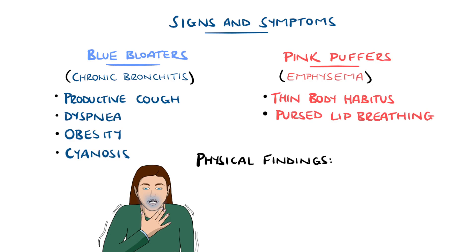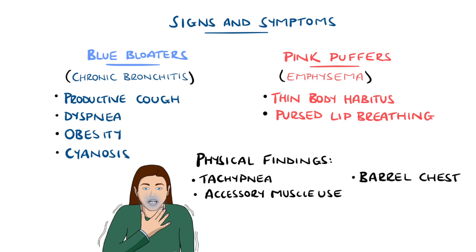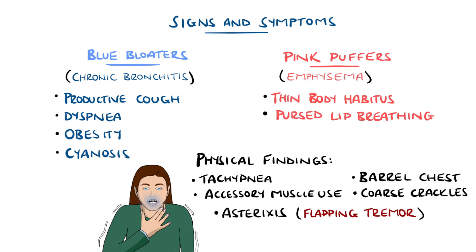Physical exam findings are not diagnostic or specific, but they can include tachypnoea, meaning a raised respiratory rate, and use of accessory muscles. Barrel chest is also common due to the hyperinflation, and on auscultation there may be coarse crackles, coming from reopening of collapsed airways and the presence of mucus. In cases where hypercapnia is present, there can also be asterixis, where there is a flapping tremor of the arms.